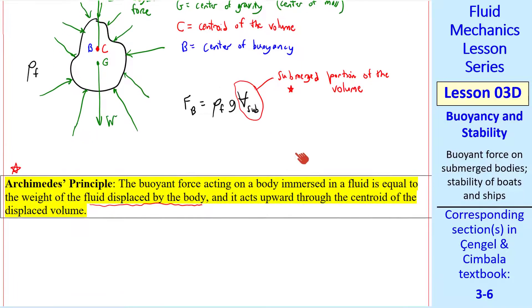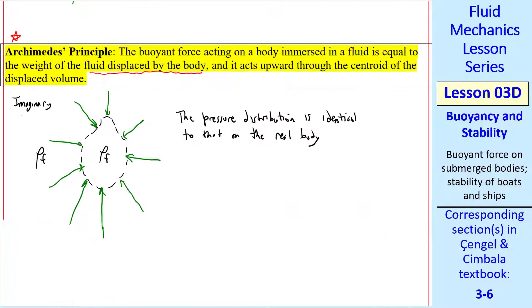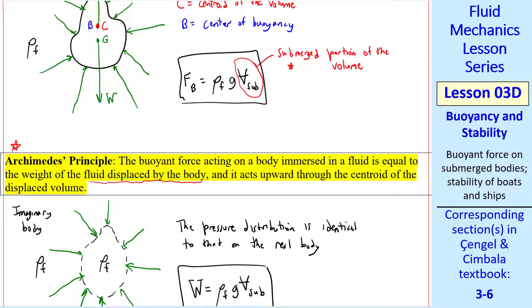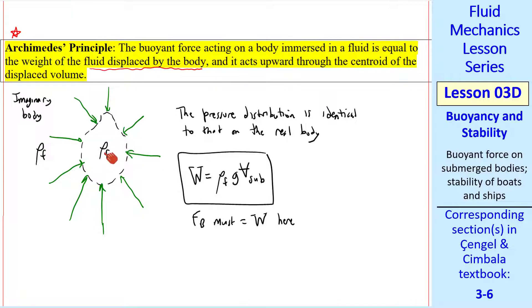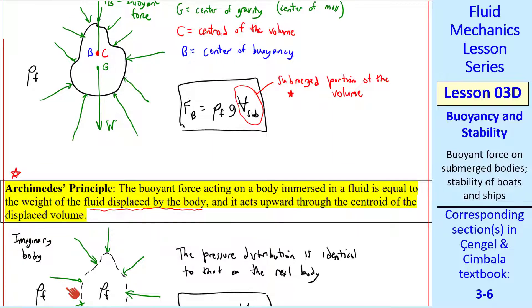Why is Archimedes' Principle true? Well, let's draw this same object, this potato, but as an imaginary object immersed in the fluid. In other words, it's not really an object, but just a chunk of fluid with this kind of imaginary boundary. The pressure distribution on this body will be identical to what we had for the real body. For this imaginary body, the density inside is the same as the density outside. So the weight of this imaginary body is ρ_F g V_sub, which we see is the same as the buoyant force on our real body. For the imaginary body, F_b must equal W, since everything's in equilibrium. After all, it's just an imaginary body. It's really just a chunk of fluid. Since we have the same pressure distribution and the same body shape, we see that Archimedes' Principle must hold.